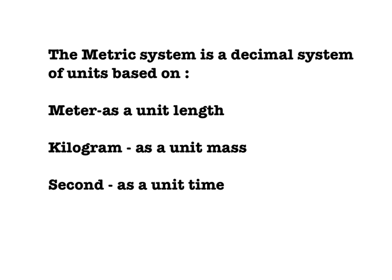The metric system is a decimal system. It is based on three basic units. Meter is the unit used for measuring length. Kilogram is the unit used for measuring mass. And second is the unit used to measure time.